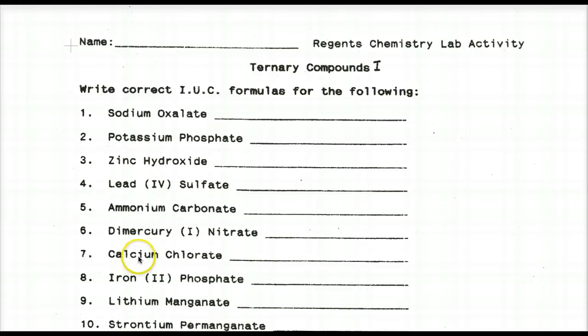This is part two of nomenclature. We'll be naming ternary compounds, which are nothing more than salts, ionic compounds, that are now having a polyatomic ion involved. Up to this point, we've been dealing with binary compounds like sodium and fluorine. Now we're going to be dealing with these polyatomic ions that we have already seen in Table E of our reference table.